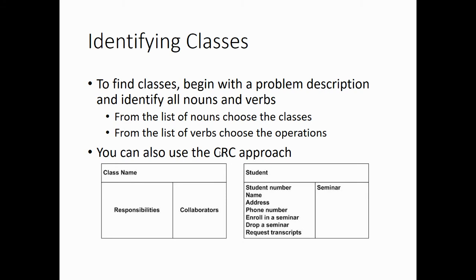For identifying classes, the author uses a noun-phrase approach to identify all the nouns as classes and verbs as potential methods or member functions within the class. Another approach is the class name, responsibility, and collaborator — CRC — approach, where you put down the class name as you discover it, its responsibilities, and its collaborators. The CRC approach is interactive and tactile — you can make cards, put them on a wall, and move them around to show different relationships. There's a whole host of approaches you'll see in software engineering.